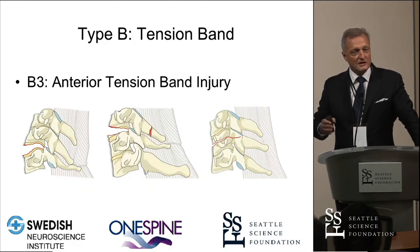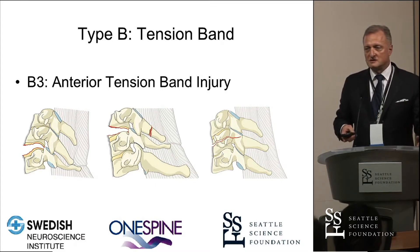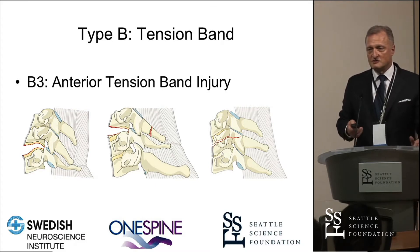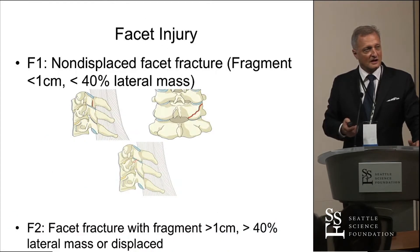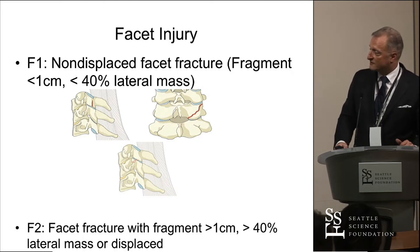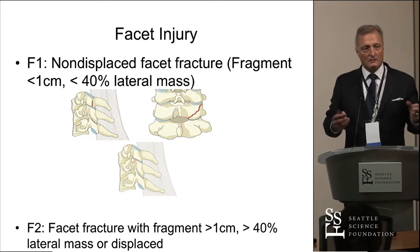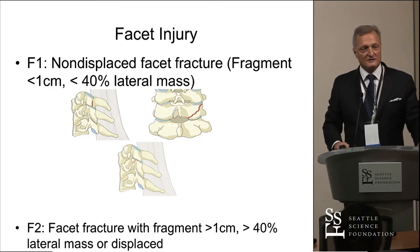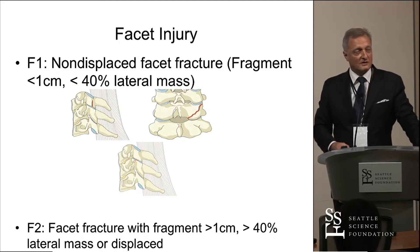B3s are the extension injuries — those are the ankylosing spondylitis type injuries, which you're seeing with increasing prevalence. C injuries are translational injuries that basically fracture everything. In the cervical spine, we had to somehow make mention of the facet joints, and so many classification systems have failed with this.